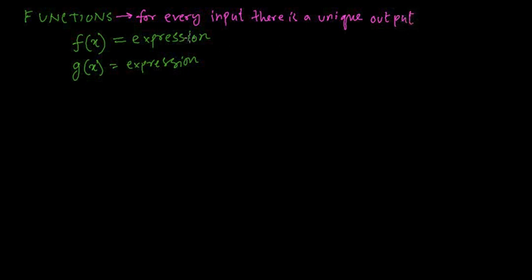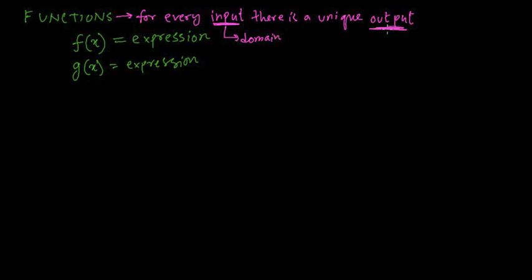So if you put one value as the input, you'll get exactly one unique value as the output. If you put one value and there are more than two values as the output, it is not a function. The input value is called the domain, and the output value is called the range.